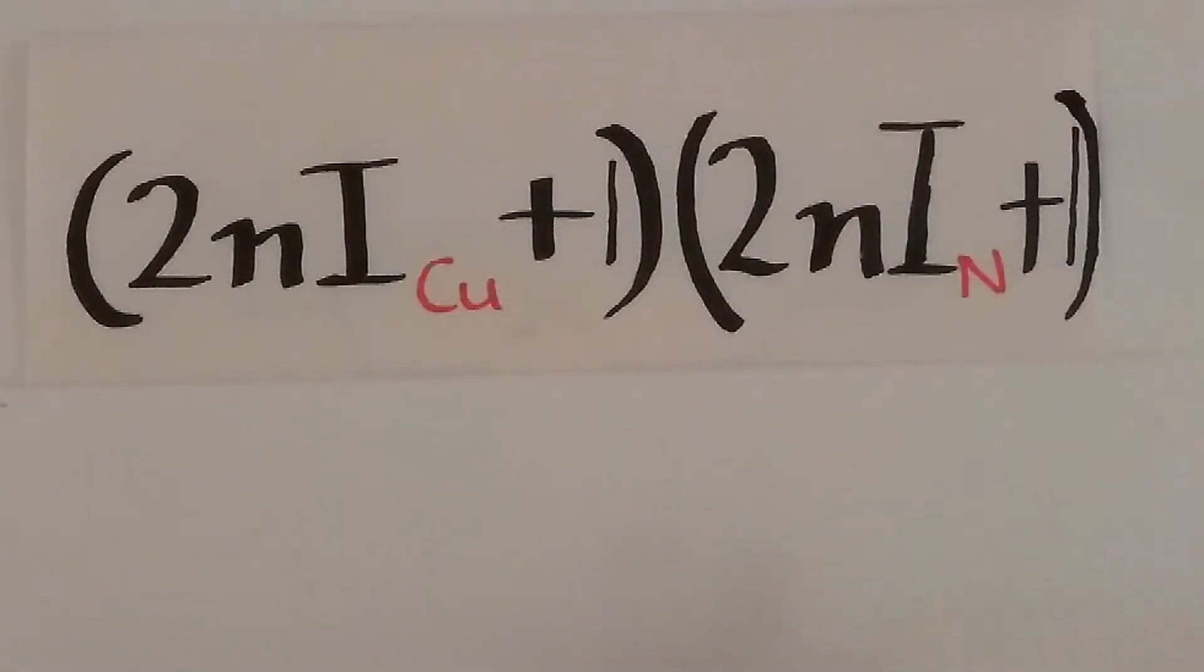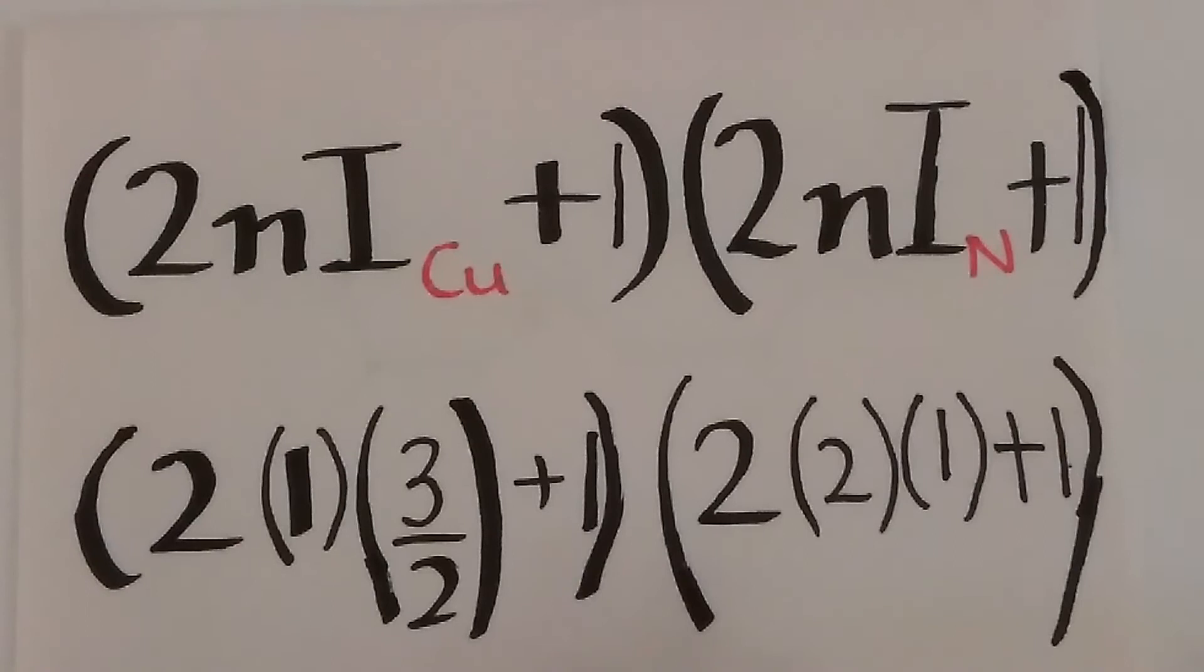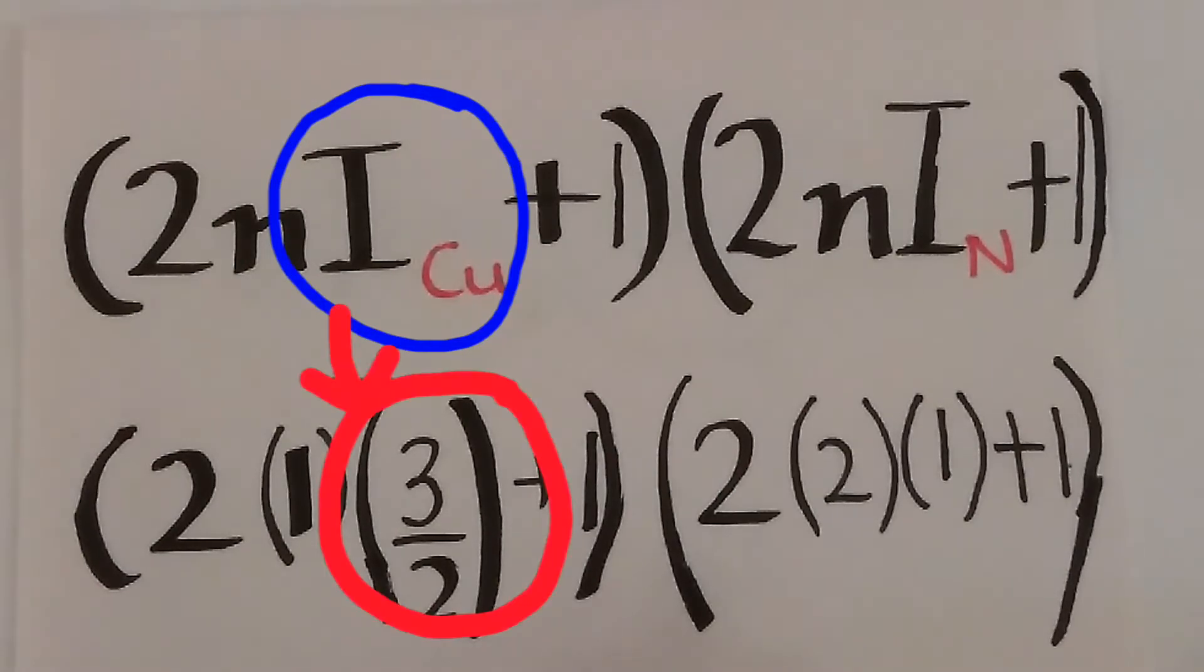The formula to calculate the number of hyperfine lines due to copper and nitrogen is as follows. This N stands for the number of copper atoms which is 1. I is a spin state of copper which is given as 3 over 2 in the question.